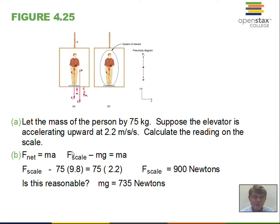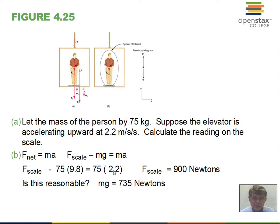Let's put this into a calculation. The mass of the person is 75 kilograms, and the elevator is accelerating upward at 2.2 meters per second squared — it has just left the entry floor and is picking up speed. Calculate the reading on the scale. F equals ma: the net external force is the scale force upward minus mg downward. Substituting: scale force minus 75 × 9.8 = 75 × 2.2. The weight of the person is 735 newtons. We do not include the mass of the spring scale or elevator — our system is only the person.